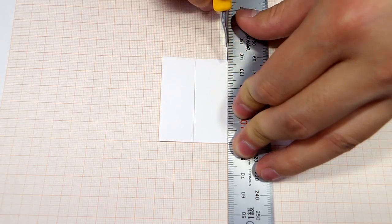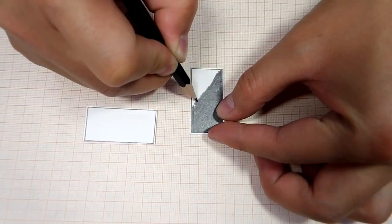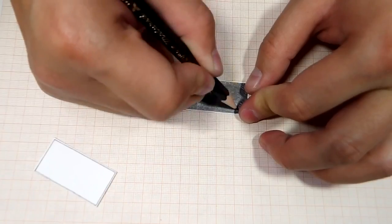Start by cutting out two paper cards, 2 cm x 4 cm wide. Then rub a pencil on one side of each card, covering them completely.